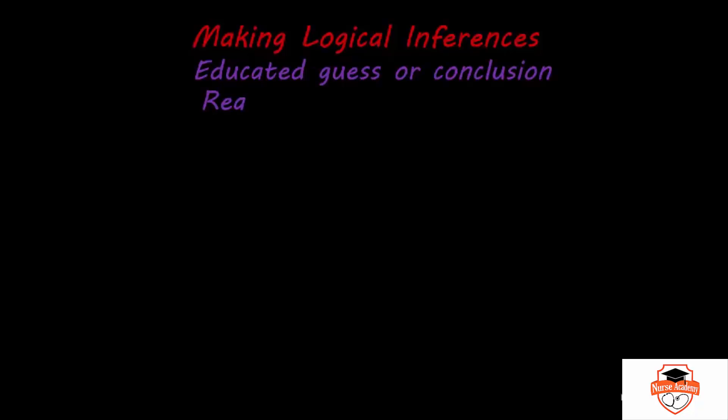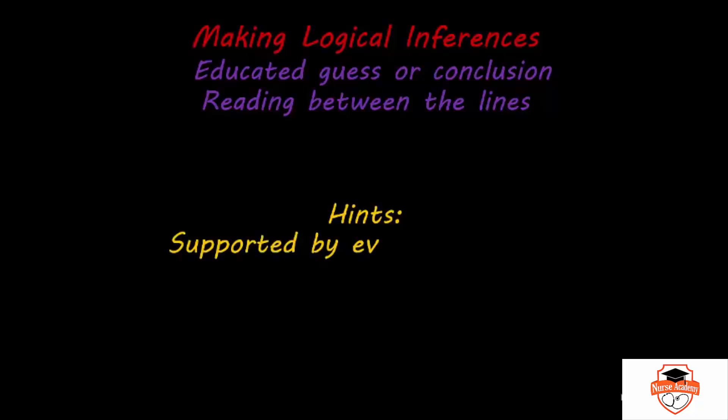Now let's look at making a logical inference. When you're making a logical inference, you are making an educated guess based off the information that you were given. It's also called reading between the lines. And some useful hints for when you are doing this would be support your inference with the evidence and facts in the article.